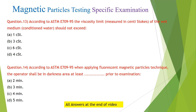Question 14: According to ASTM E709-95, when applying the fluorescent magnetic particles technique, the operator shall be in a darkness area for at least the following time prior to examination: (A) 2 minutes; (B) 3 minutes; (C) 4 minutes; (D) 5 minutes.